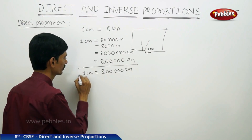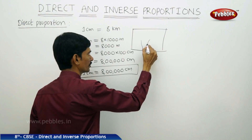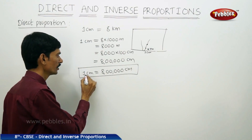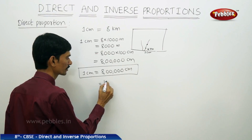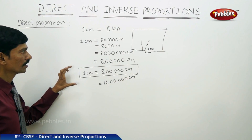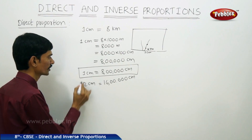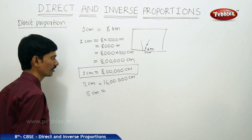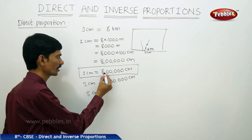This scale represents that if the distance between any two points on the actual region is 8 lakh centimeters, we take 1 centimeter on the map. If the actual distance is 16 lakh centimeters, then the length on the map is 2 centimeters. If the length on the map between two points is 5 centimeters, then 1 is multiplied by 5, so 8 is also multiplied by 5 to get the actual distance.